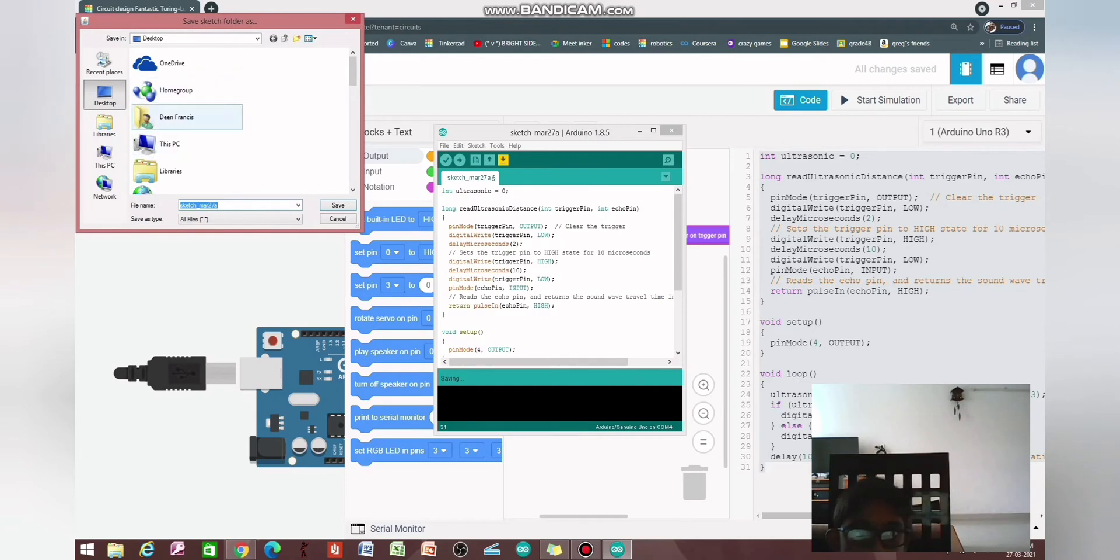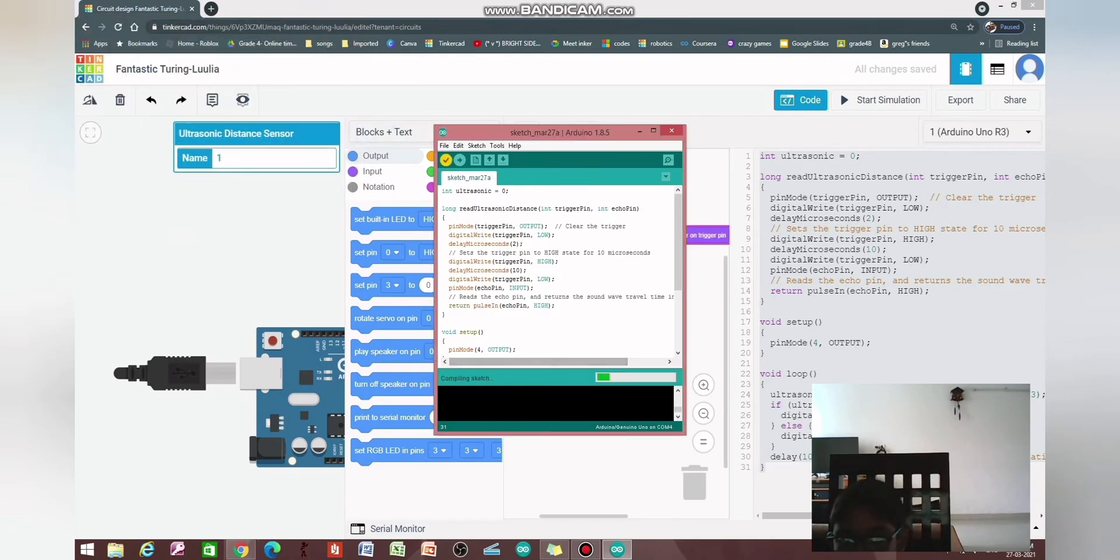Then, you can save it wherever you want. I'm just simply saving it on the desktop. Compiling sketch. If the message comes as done compiling, that means you are ready to go. You can move towards the next step, which is uploading.